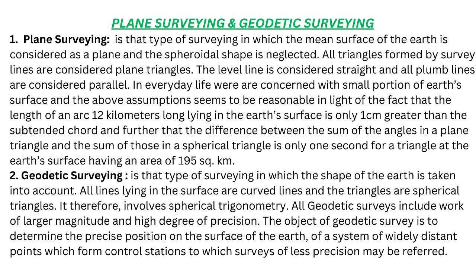Geodetic surveying is the type of surveying in which the shape of the Earth is taken into account. All lines lying in the surface are curved lines and the triangles are spherical triangles. It therefore involves spherical trigonometry. All geodetic surveys include work of larger magnitude and high degree of precision. The object of geodetic survey is to determine the precise position on the surface of the Earth of a system of widely distant points which form control stations to which surveys of less precision may be referred.